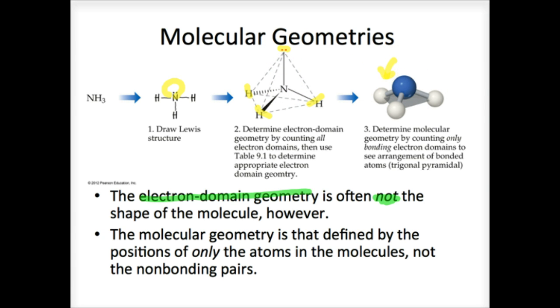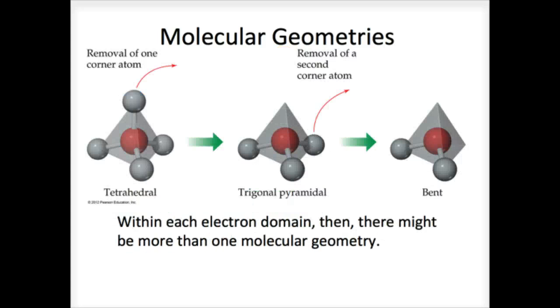These lone pairs have a repulsive force on the bonded pairs, pushing them further away, and they occupy more space. So, we can determine our molecular geometry from a particular electron geometry, but the electron geometry isn't necessarily the molecular geometry.